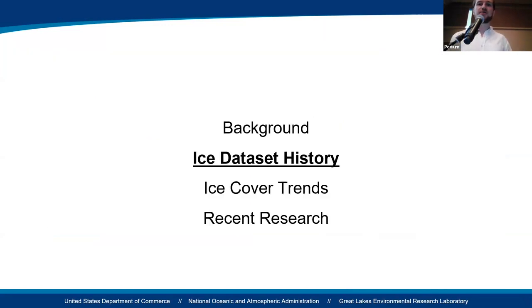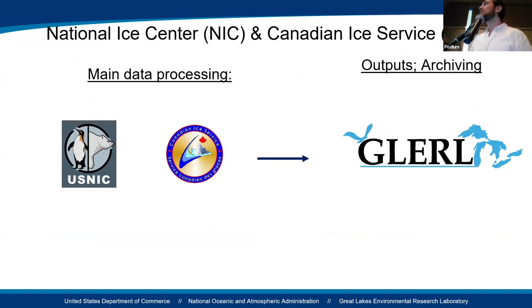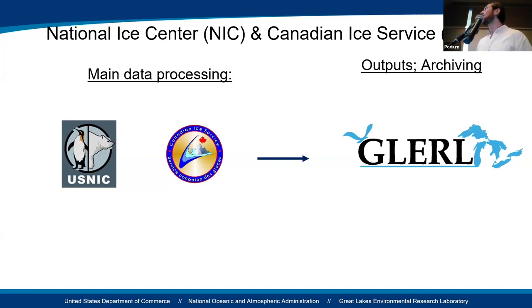So I'll get into the history now. As I mentioned at the beginning, there's been this long coordination between the US National Ice Center and the Canadian Ice Services and GLURL. The main data processing of the satellite data is done by the US NIC and CIS, and then the post-processing and a lot of analysis and archiving of the data is done by GLURL.